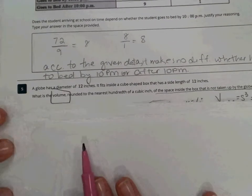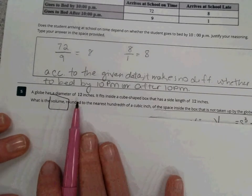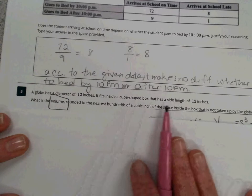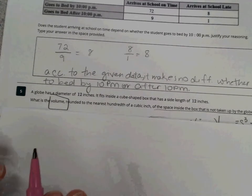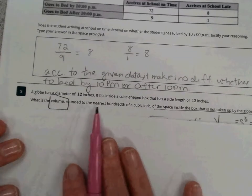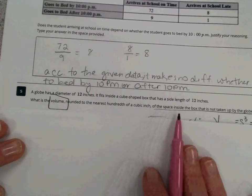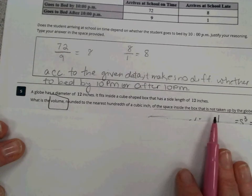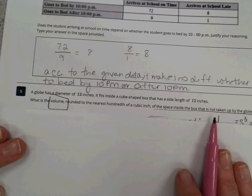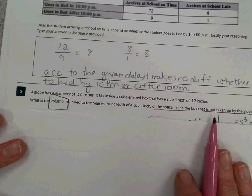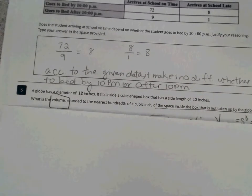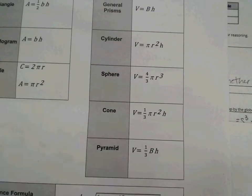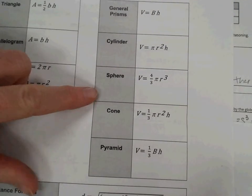Question number 5 is a globe. It has a diameter of 12 inches. It fits inside a cube-shaped box that has a side length of 12 inches. You can picture that cube with a sphere inside. What is the volume rounded to the nearest hundredth of a cubic inch of the space inside the box that is not taken up by the globe? Well, in this case, we literally just have to find the volume of each of the cube and the sphere and subtract. We have enough information to find all of those pieces. If you've forgotten, on your reference sheet here, you have sphere, and we have that formula.